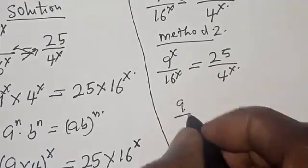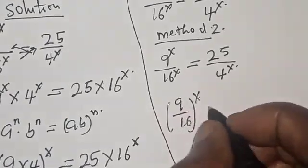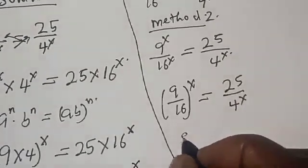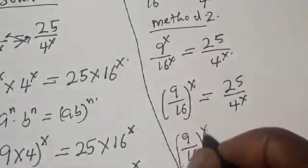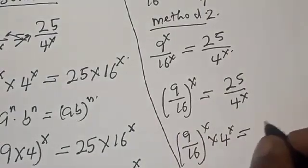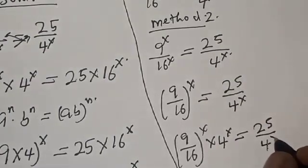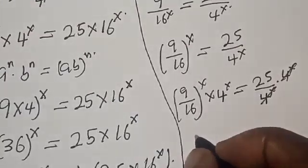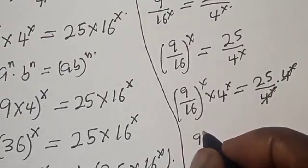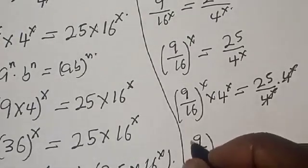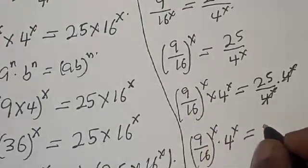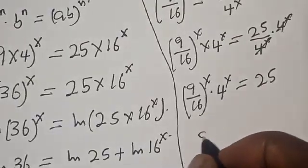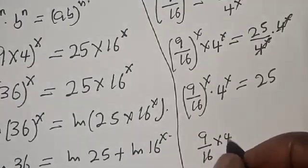The left-hand side is 9 over 16 raised to power s is equal to 25 over 4 raised to power s. Let's multiply both sides by 4 raised to power s. Then 9 over 16 raised to power s multiplied by 4 raised to power s is equal to 25. They have the same power, so we can combine the bases.